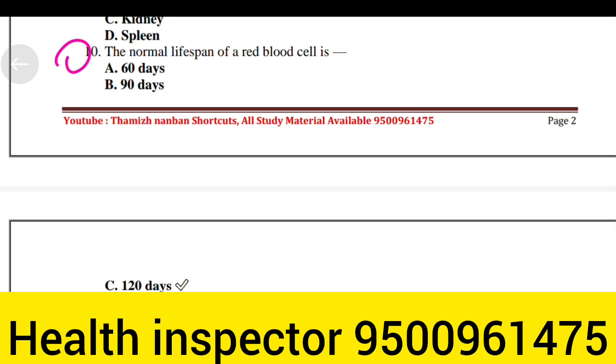The normal lifespan of red blood cell is Option C, 120 days.